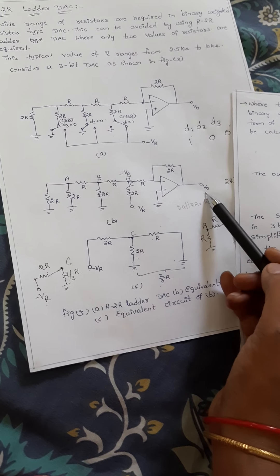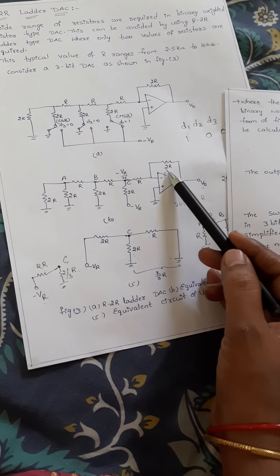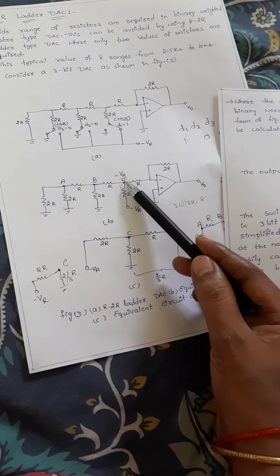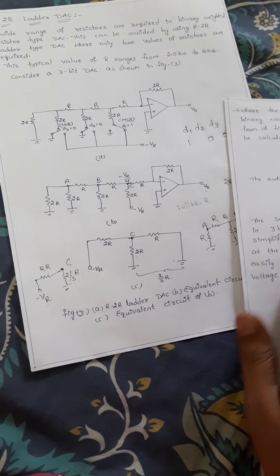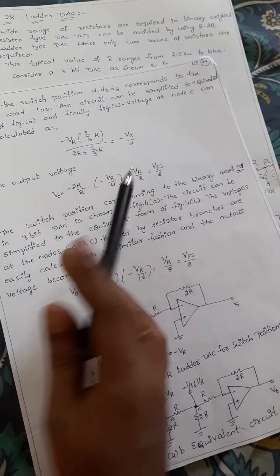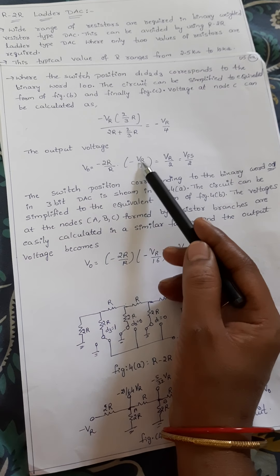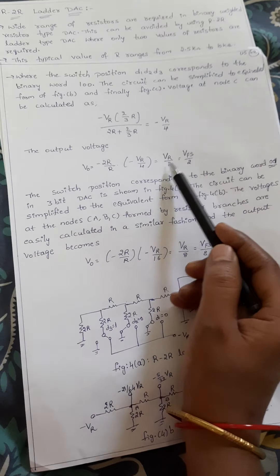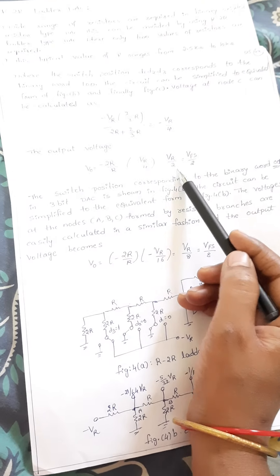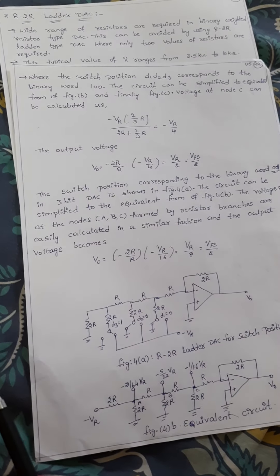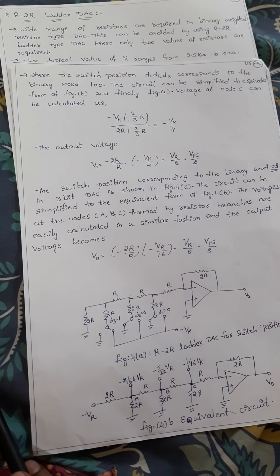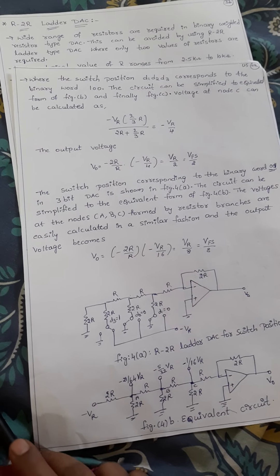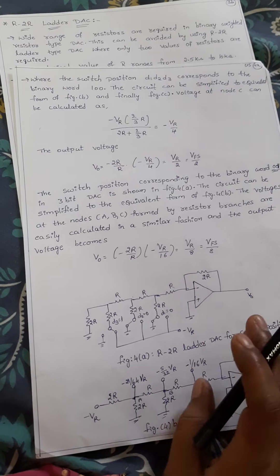Output voltage V0 equals minus 2R by R into input voltage, which is minus VR by 4. So minus 2R by R into minus VR by 4 gives VR by 2. That is VFS by 2 — VR by 2 is nothing but V full scale voltage divided by 2.